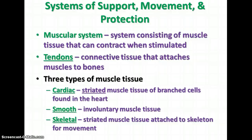The next system in support and movement is the muscular system, made of muscle tissue that can contract when stimulated. There are also connective tissue parts called tendons, which attach muscles to the bones. The bones are basically the levers and the muscles are the things that move the levers. There are three types of muscle tissue in humans and other mammals: cardiac muscle, which is striated muscle with branched cells found only in the heart; smooth muscle, which is involuntary muscle found in the intestines and other organs; and skeletal muscle, which is striated muscle attached to the skeleton for movement.